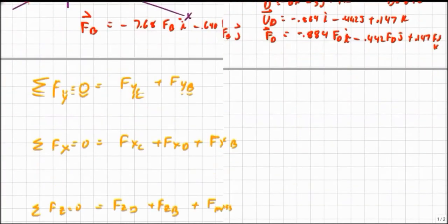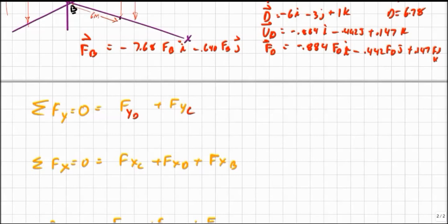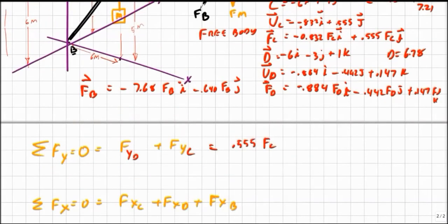So I've already written my equilibrium equations here. So in the Y direction, and I'm going to do it in the other order here when I write this just because it's convenient. So I've got 0.555 times F C which we get from right here. That's in our J or Y direction minus 0.442 F D.